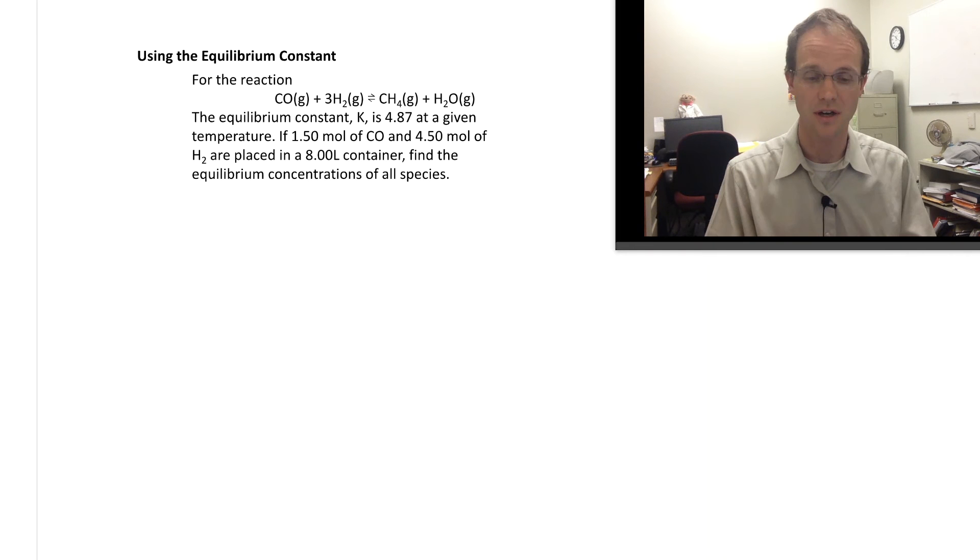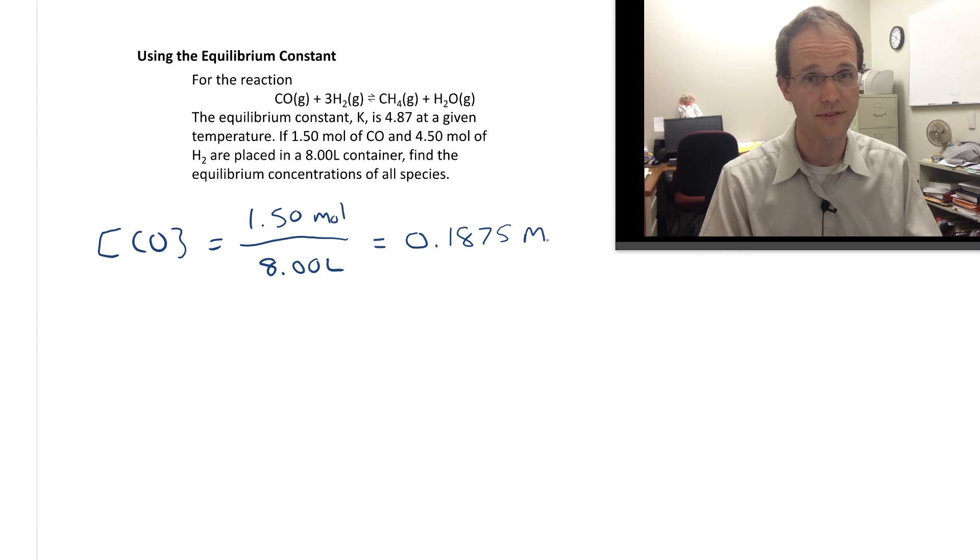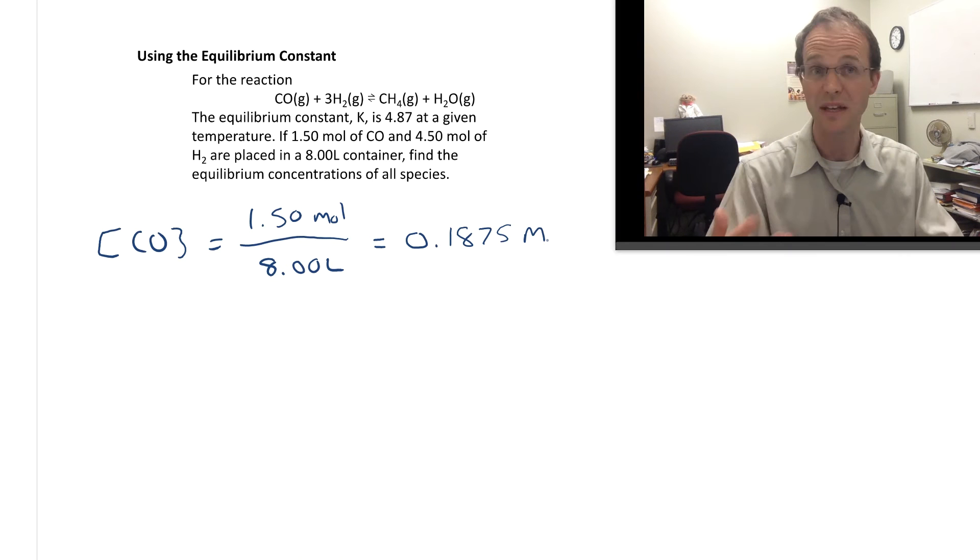Let's do that first. We're going to find the initial concentration of CO, and that's going to be 1.50 moles of CO divided by 8.00 liters, and if I do that I get 0.1875 molar. Now if you're paying attention to sig figs, which is always a good idea, I have one extra one here, but that's okay. We don't mind having an extra sig fig in the middle of calculations since it's all going to be multiplication and division.